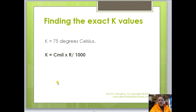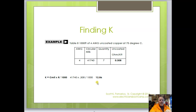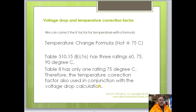To find exact K, the formula is: circular mills (from Table 8) × resistance (from Table 8) ÷ 1000. If they give you a specific wire type, you can find exact K. If they just say 'number 8 wire,' use 12.9 for copper or 21.2 for aluminum. For example, for number 4 wire: 41,740 (circular mills) × 0.308 (ohms per thousand feet) ÷ 1000 = 12.86, which is essentially 12.9.